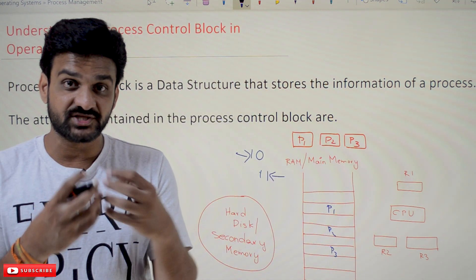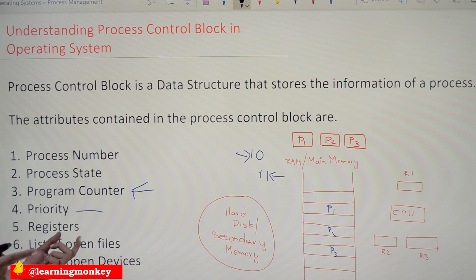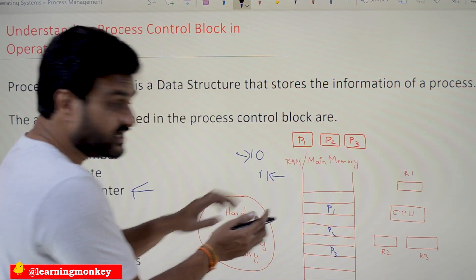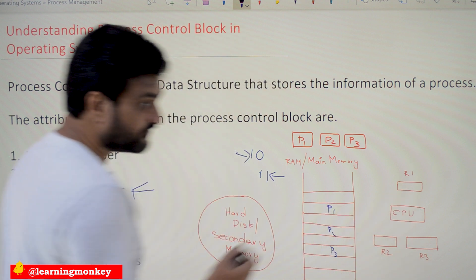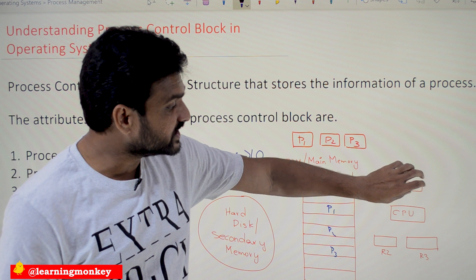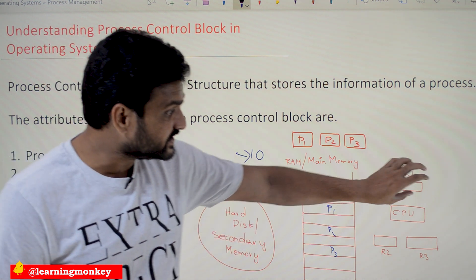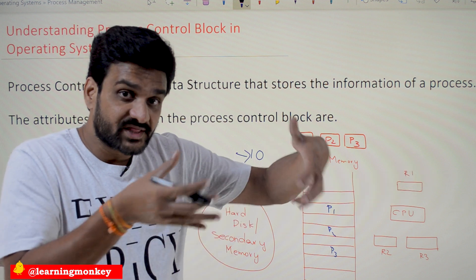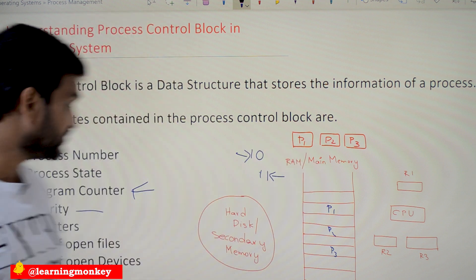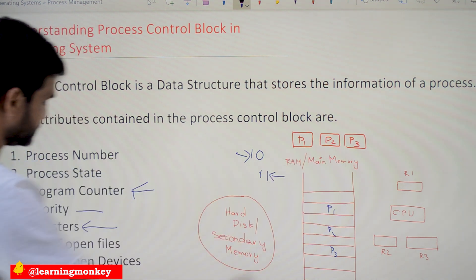Based on priority, preference is given to a process to get shifted from ready state to running state, so that priority has to be maintained. The next attribute is registers — these are the general purpose registers. As we shift from running state to ready state, for executing instructions we maintain certain variables and their values in the registers. As we move from running state to ready state, the values in all the registers around the CPU have to be saved, and those details will get maintained in the PCB.